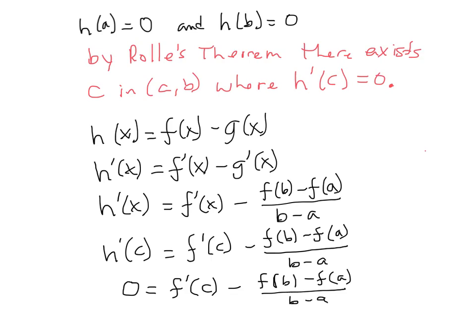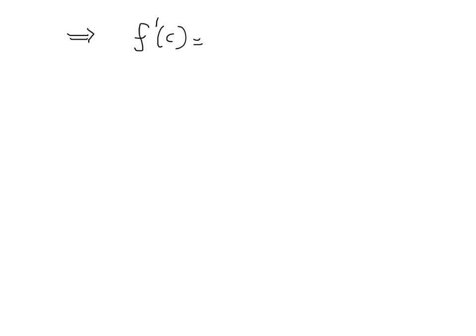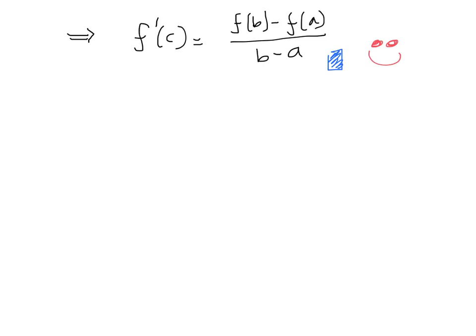We're almost at the end of the proof. Since h'(c) = 0, all we do is solve this equation for f'(c). That gives us f'(c) = (f(b) - f(a)) / (b - a), and the proof is done — that's exactly what we were shooting for. That's the proof of the Mean Value Theorem.